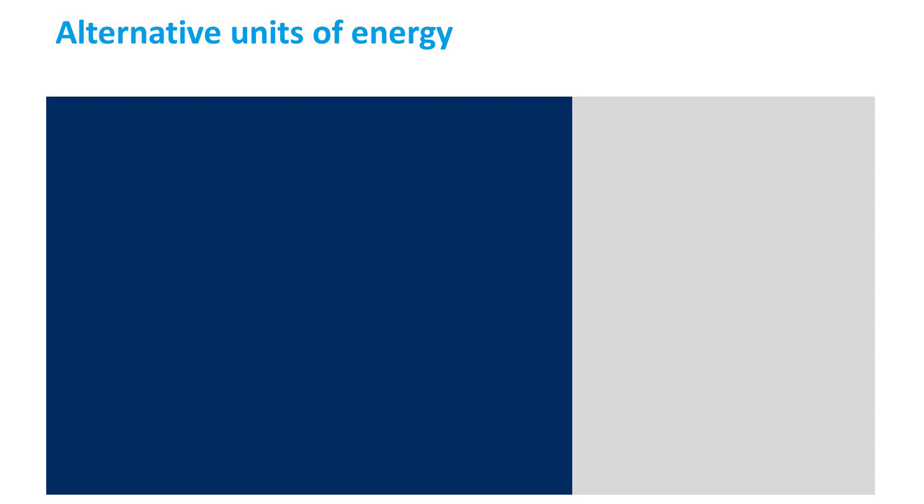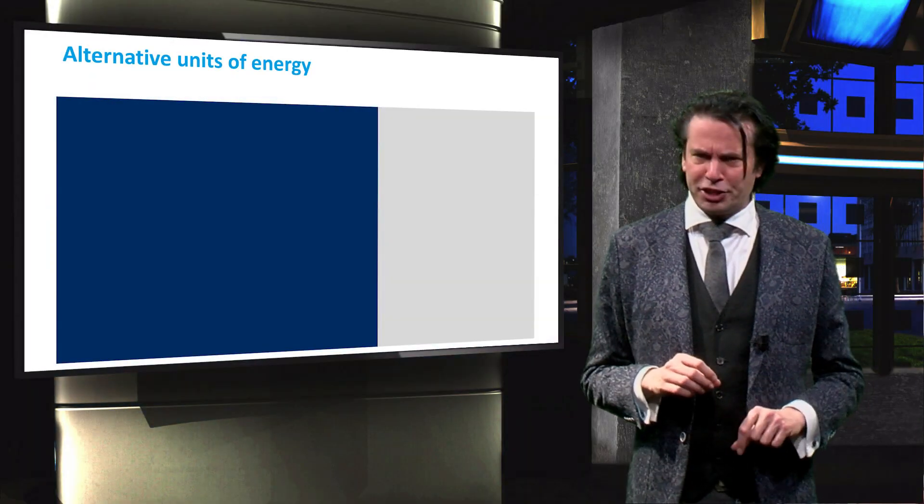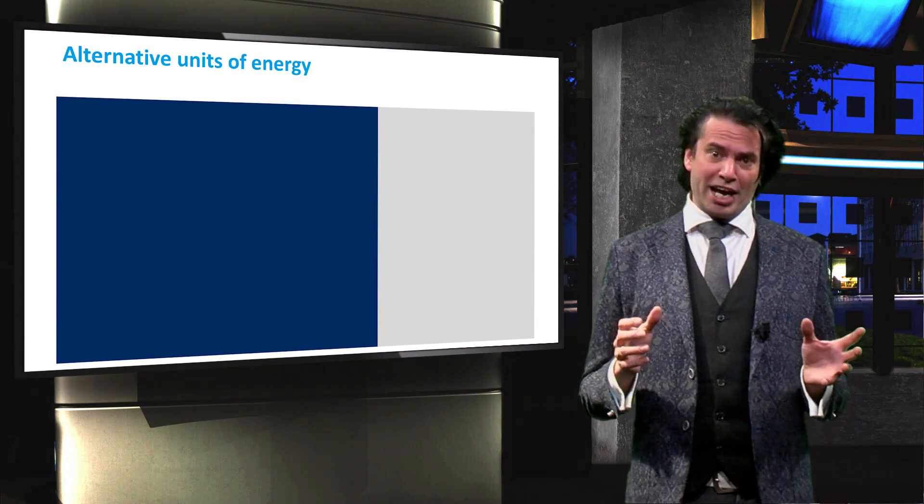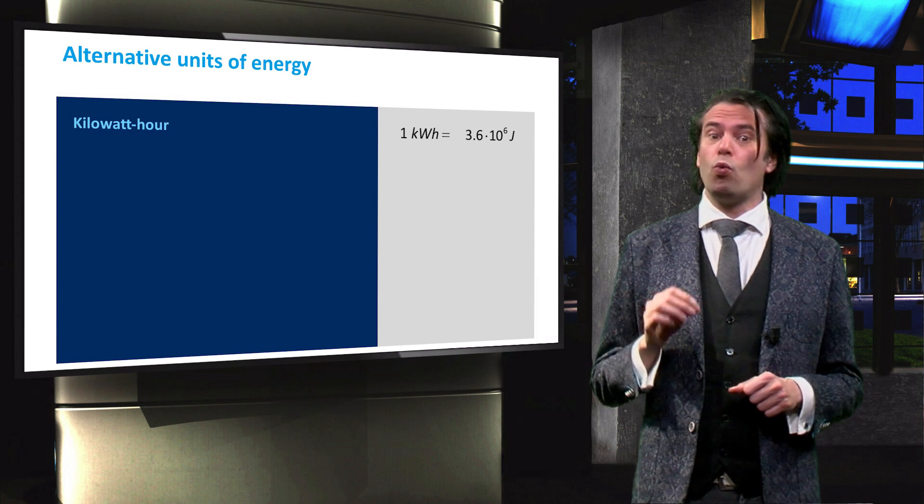Joules are not the only unit used to express a certain amount of energy. One joule is a very small amount compared to the human energy consumption. Therefore, a different unit of energy is used for the production and consumption of electrical energy, namely the kilowatt hour.